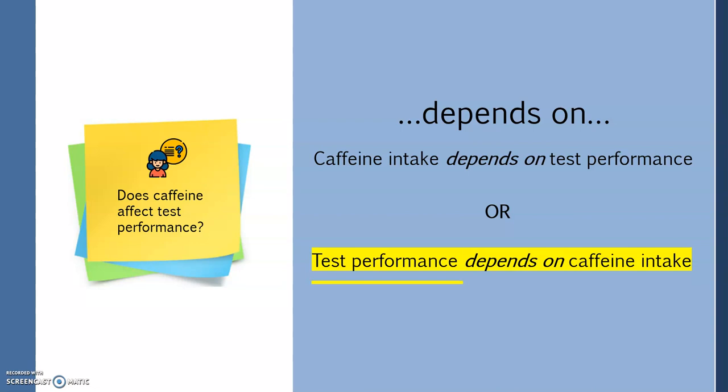Because test performance comes before the depends on or depends on something else for its effect, it is our dependent variable. Then you know that caffeine intake is our independent variable because it comes after the depends on.